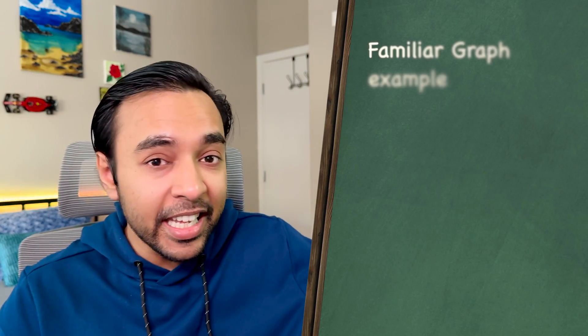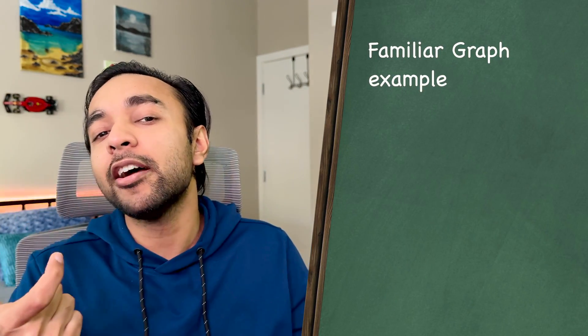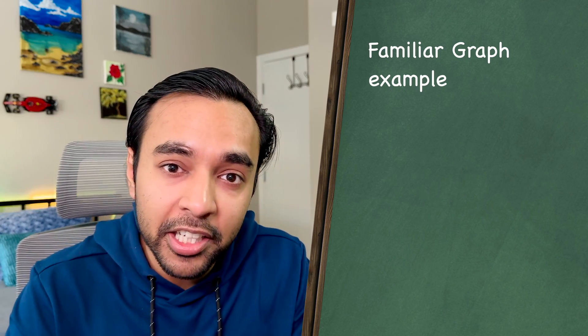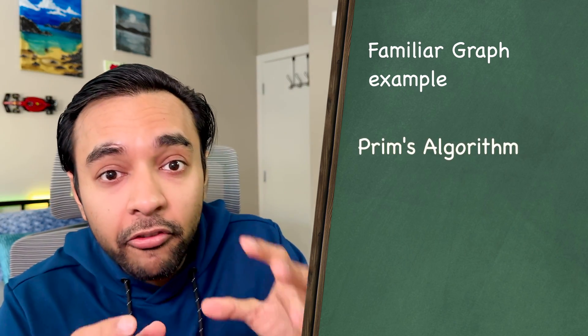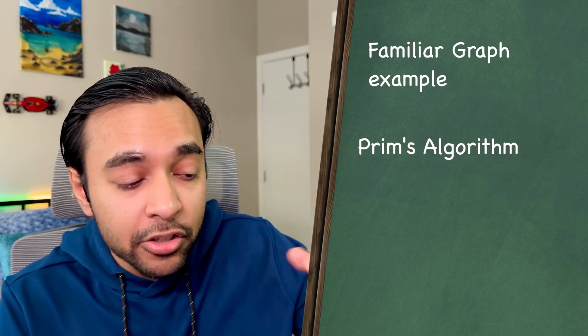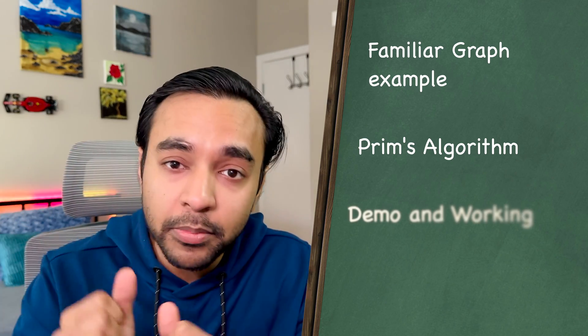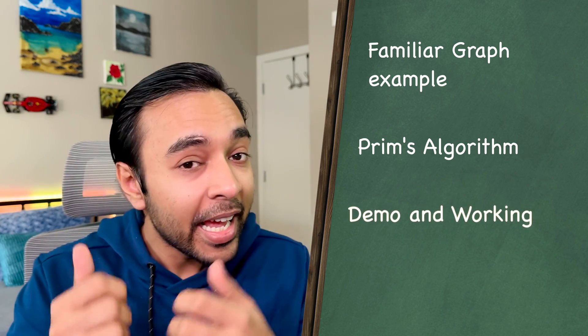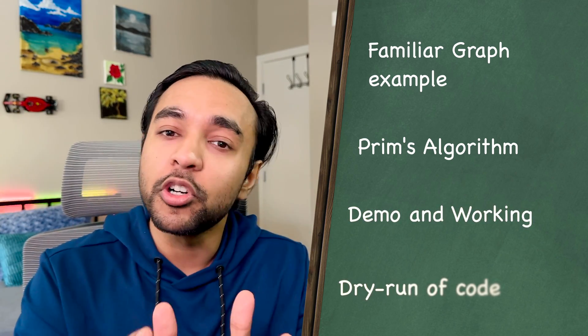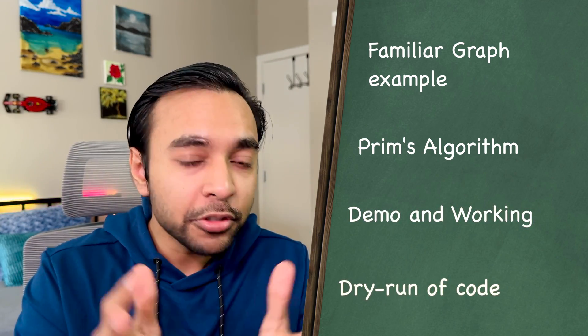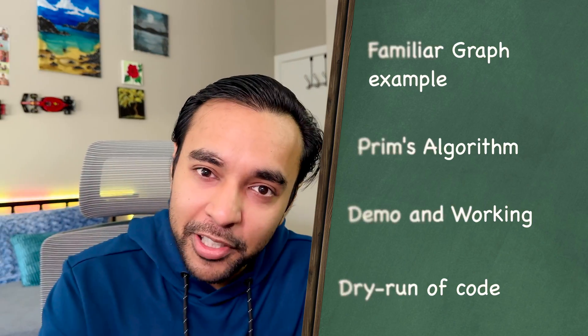Hello friends, welcome back to my channel. First of all, we will take a familiar graph and find out its minimum spanning tree. Going forward, we are going to use Prim's algorithm to derive our minimum spanning tree. And then as usual, we will also do a dry run of the code so that you can understand how all this actually works in action. Without further ado, let's get started.